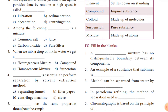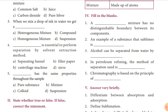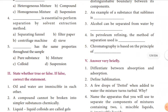Among the following, juice is a mixture; common salt, carbon dioxide are compounds; and pure silver is a pure substance. When we mix a drop of ink in water, we get a homogeneous mixture. A separating funnel is essential to perform separation by the solvent extraction method. A pure substance has the same properties throughout the sample.